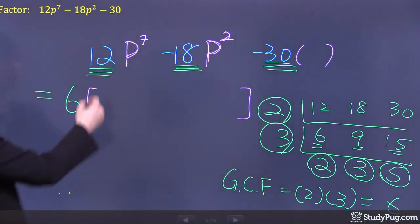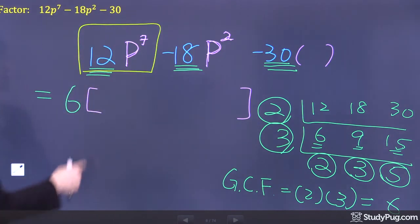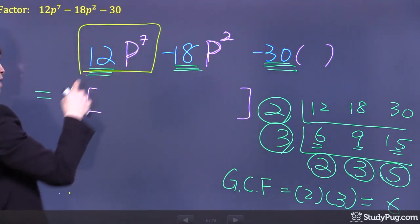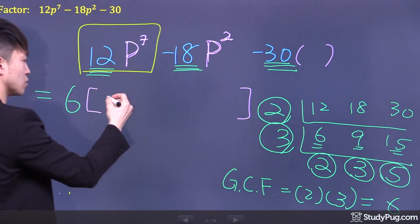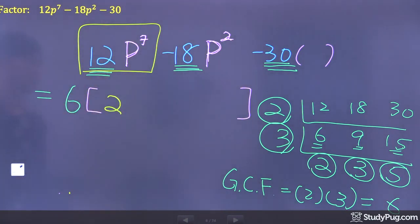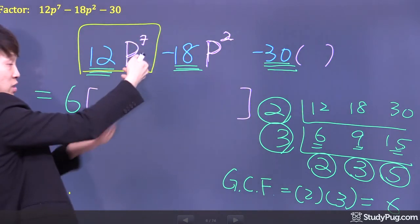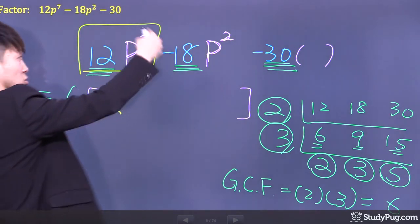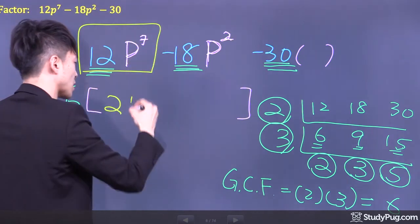So now for the first term, 12 factor out of 6, we have 2, right? Because 12 divided by 6 is 2. And now, since we didn't take out any p, the p will stay. So here we have p to the power of 7.